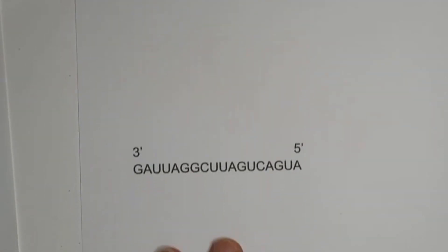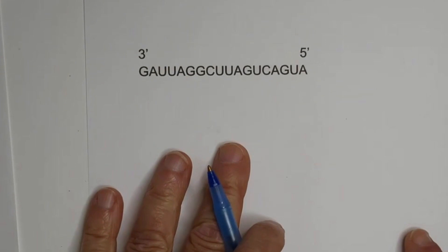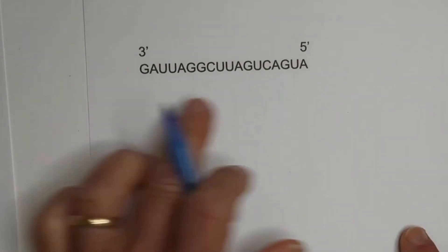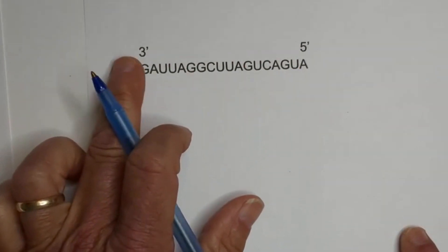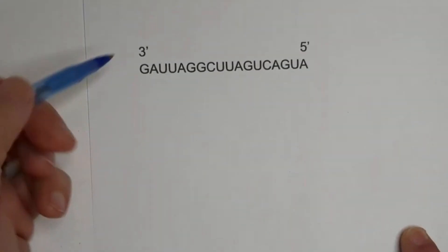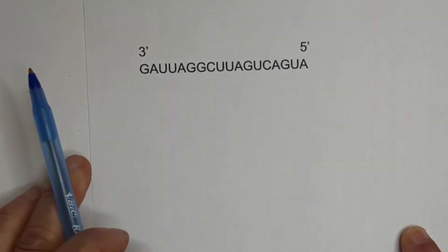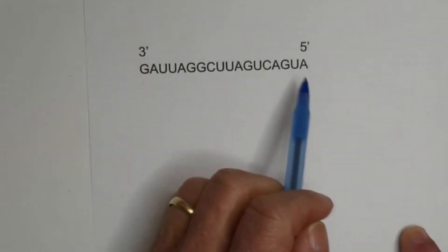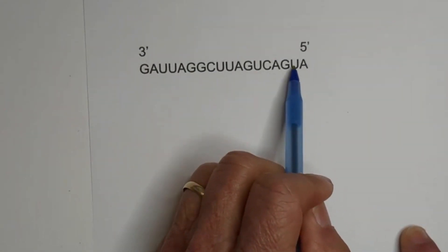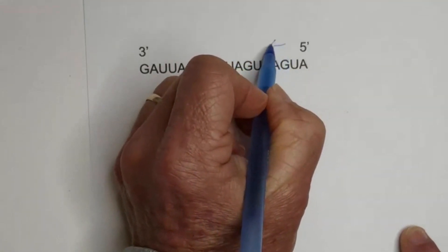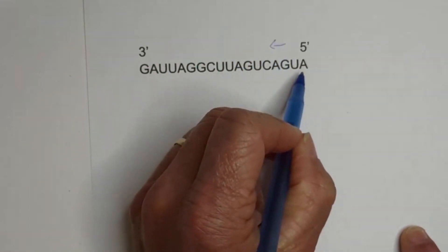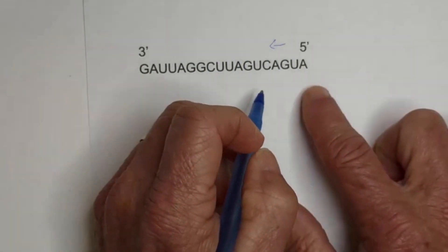Now, you may encounter this. Remember, you always read from 5 to 3. Well, this is in 3 to 5, because you may get this when you translate from the DNA. Okay, so what you can do, you're going to be reading in this direction from 5 to 3, and that can be a little confusing, so what you can do is just flip it.